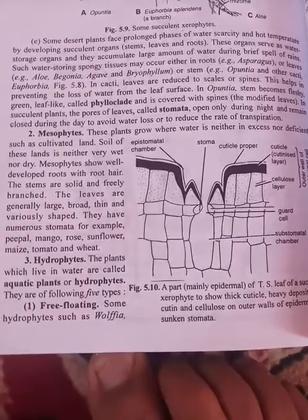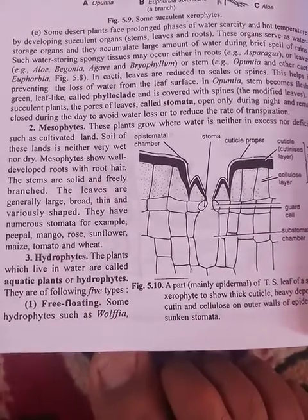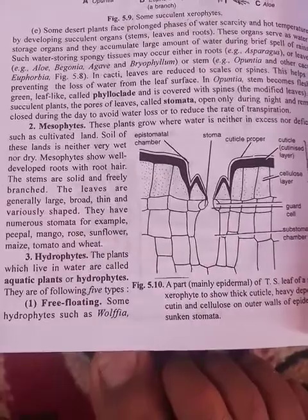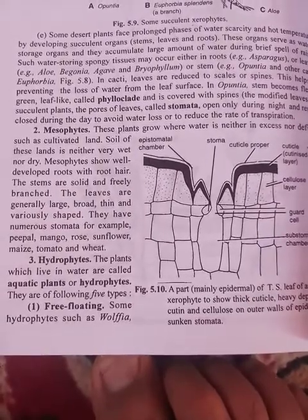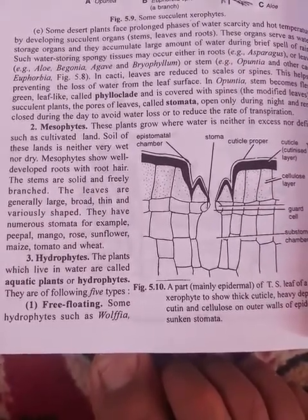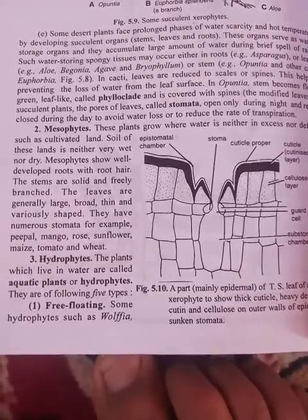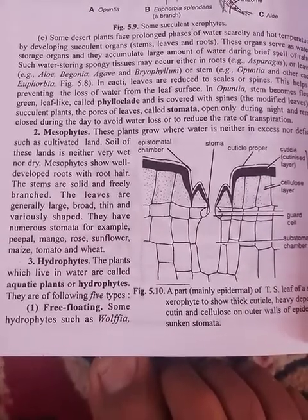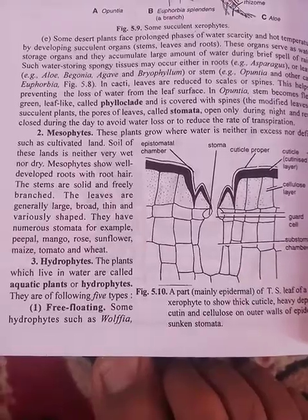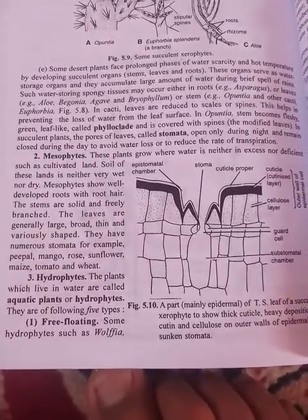Mesophytes show well-developed roots with root hairs. Their stems are solid and freely branched. The leaves are generally broad, thin, and various shaped, and they have numerous stomata. Examples include peepal, mango, rose, sunflower, maize, tomato, and wheat — covering cereal plants, pulse plants, fruit plants, and vegetable plants.